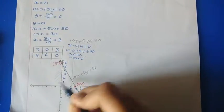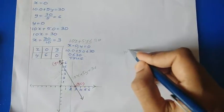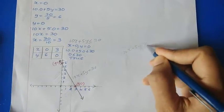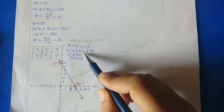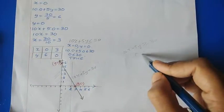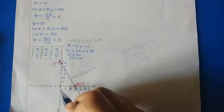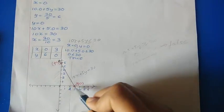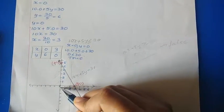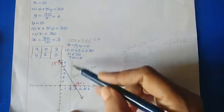Suppose you get false for that point. For example, if the inequality were 10x plus 5y greater than or equal to 30, putting x equal to 0 and y equal to 0 gives 0 greater than or equal to 30, which is false. If you get false, then you shade the other area — not the region containing the origin. Based on that, you can find the shaded region.